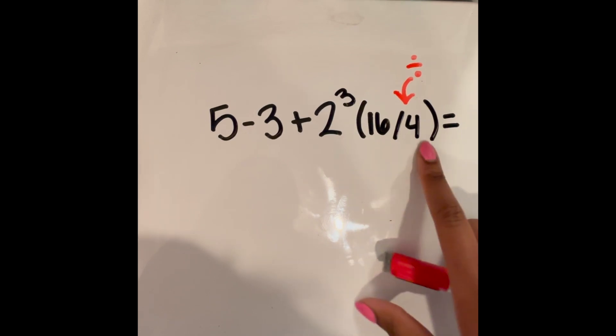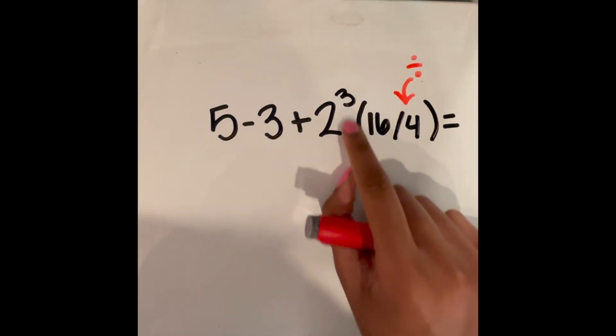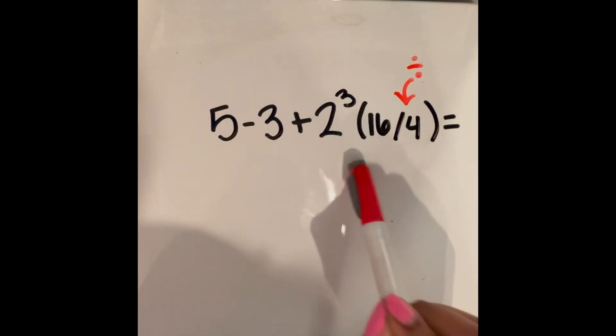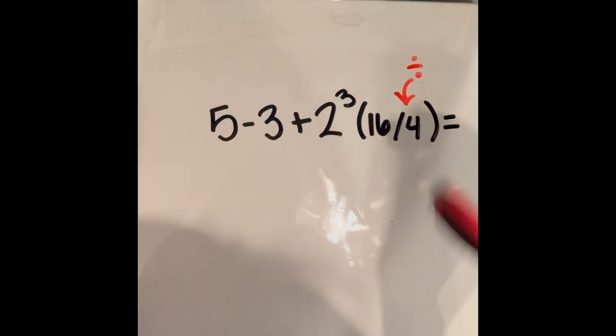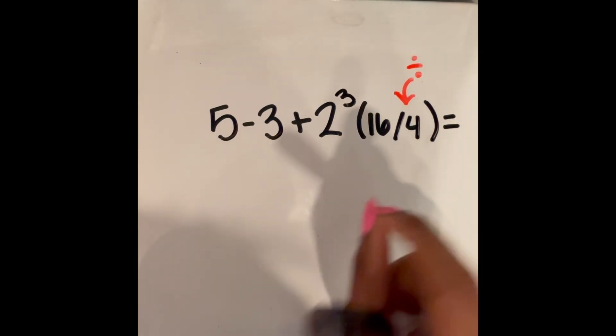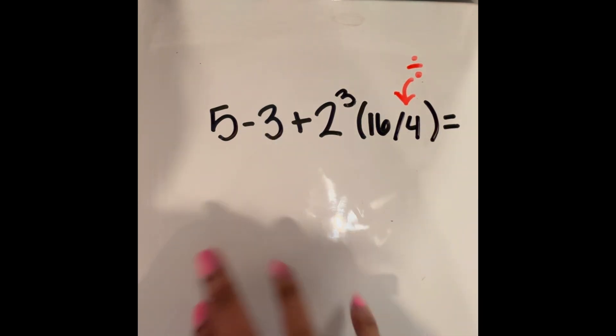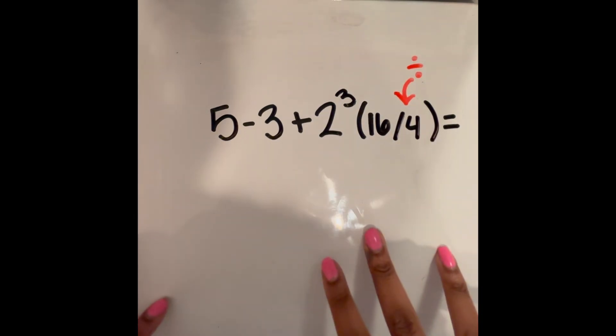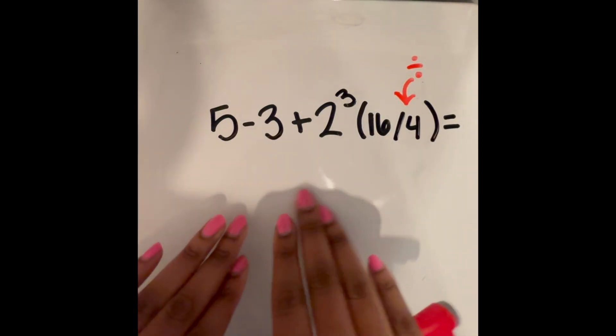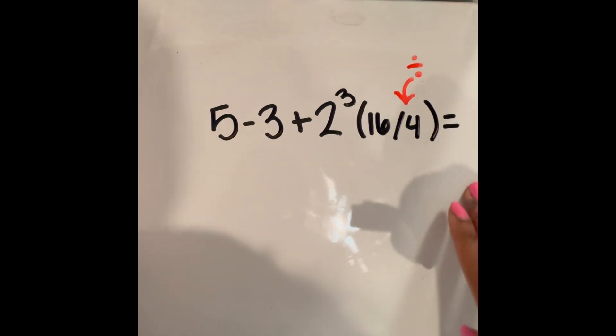The other thing I wanted to make a note of and clarify is that right here we have 2 cubed times 16 divided by 4 in parentheses. This is being multiplied. Although we don't have an actual multiplication sign here because they're written together with the set of parentheses, we know that we are multiplying. So definitely keep that in mind, especially for future problems similar to this. So right away now we have to solve this according to order of operations, in other words, PEMDAS.